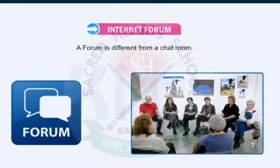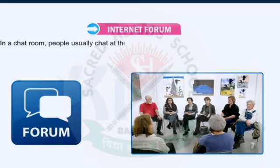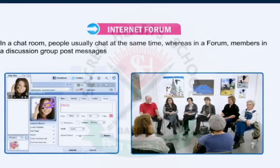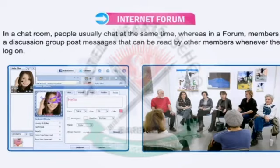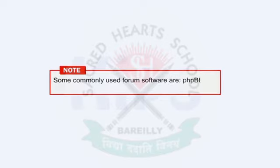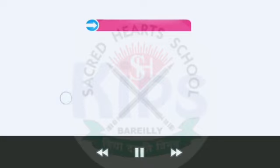A forum is different from a chat room. In a chat room, people usually chat at the same time. Whereas in a forum, members in a discussion group post messages that can be read by other members whenever they log in. So, internet forum is a discussion area where you can post a question and other persons from anywhere in the world can reply to it — this way we can hold a discussion using the forum. Note that some of the commonly used forum software are phpBB and FUD Forum.